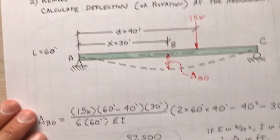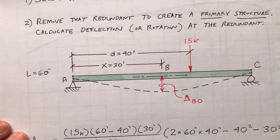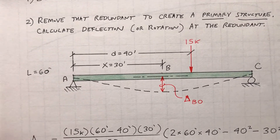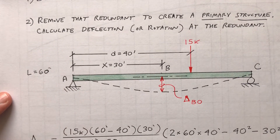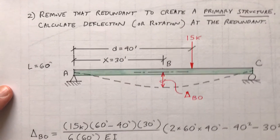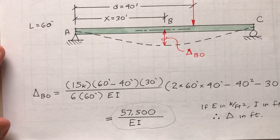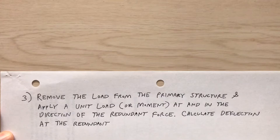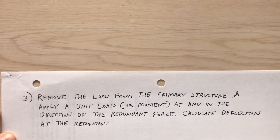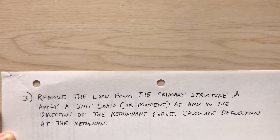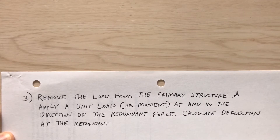So that's step two: remove the redundant, create the primary or released structure, and calculate the deflection at the now-missing redundant. Step three says: remove the load from the primary structure and apply a unit load at and in the direction of the redundant force, then calculate the deflection at the redundant.